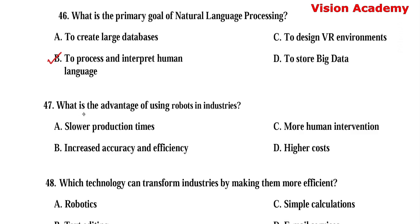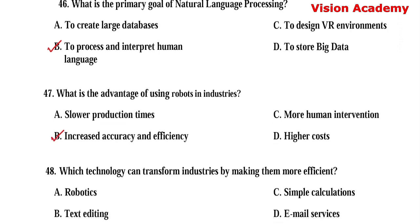Question number 47. What is the advantage of using robots in industries? Option A: Slower production times. Option B: Increased accuracy and efficiency. Option C: More human intervention. Option D: Higher costs. Here, option B, increased accuracy and efficiency, is the right answer.